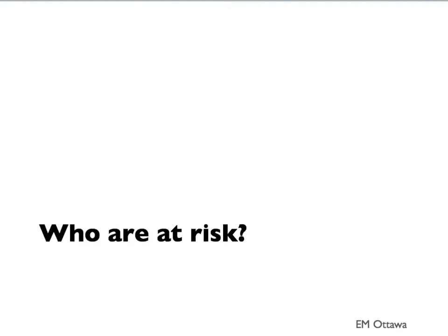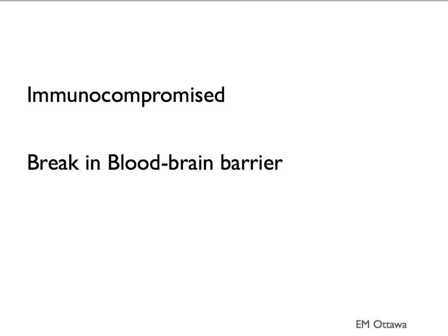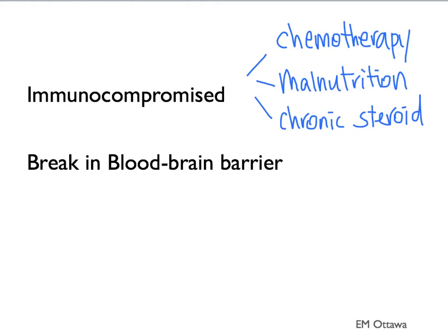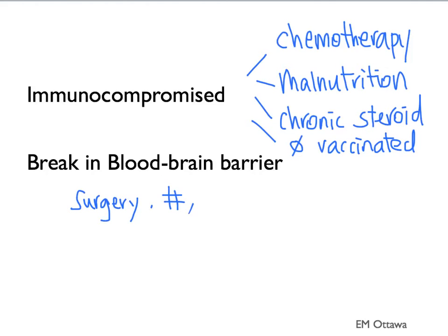In terms of at-risk populations, as with most infections, they include patients who are immunocompromised, such as those on chemotherapy, with malnutrition, chronic steroid use, or those who have not been vaccinated. Another risk factor is any break in the blood-brain barrier, which makes bacteria more likely to invade — including surgery, trauma such as basal skull fracture, or indwelling hardware such as VP shunts.